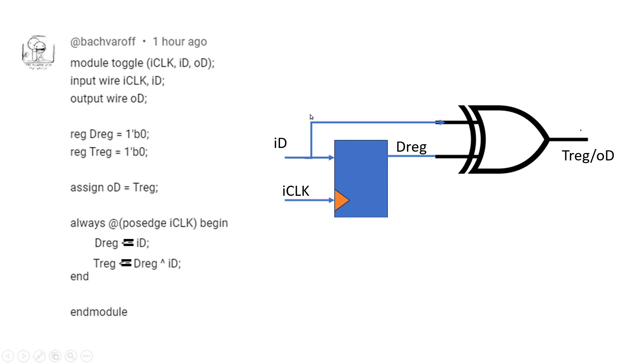Whenever the positive edge of the clock happens, id will become equal to dreg. That means this statement is going to implement one flip-flop. As the other statement is a blocking statement, this will not work in parallel to the previous statement. So this statement is not going to implement a flip-flop.